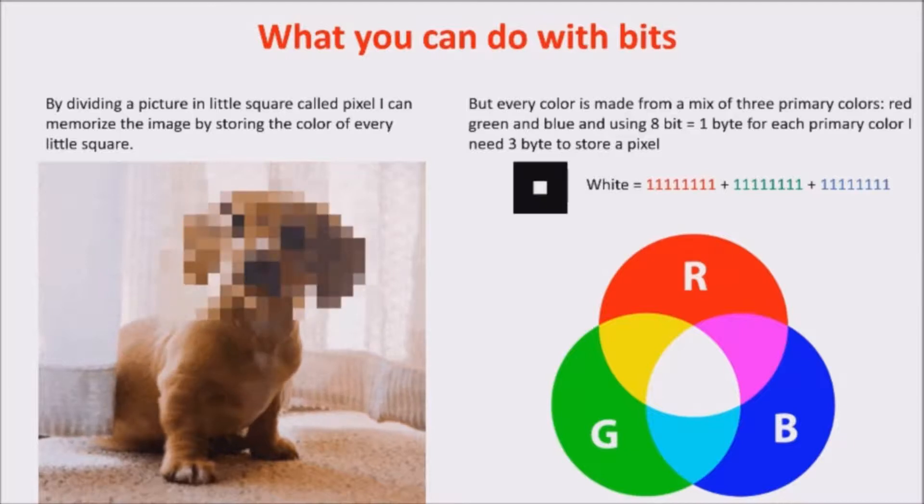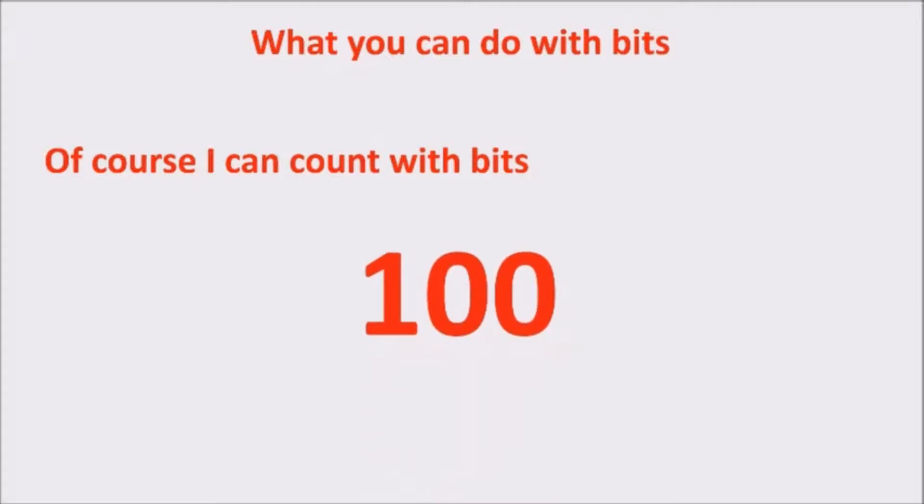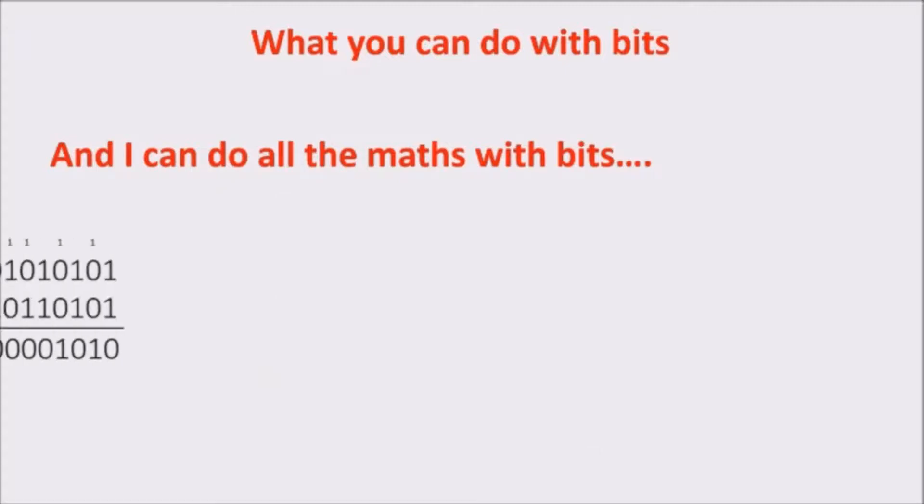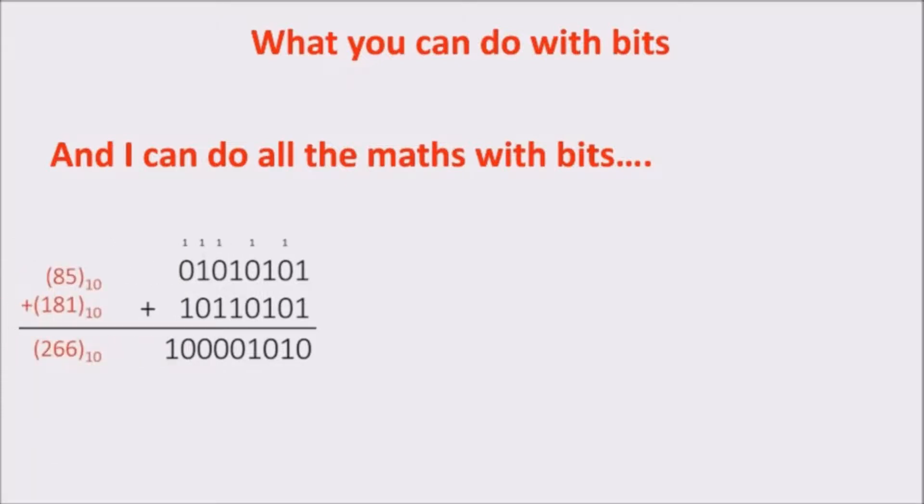You can memorize the whole picture storing these 3 bytes for every pixel. With bits, of course, I can count. Zero, one, and two. You can see I just need to add more digits. Three, four, and five, and so on. And we can do all the math with bits, because it is just another counting system. It is called binary system. And we can do all kind of operation we do with decimal system.